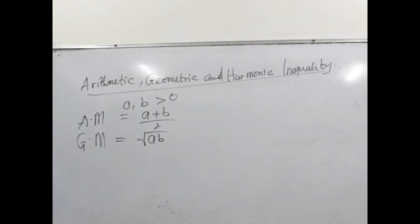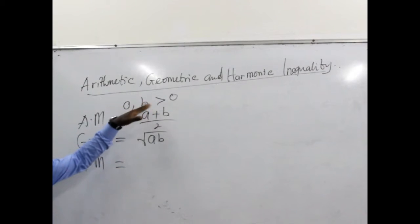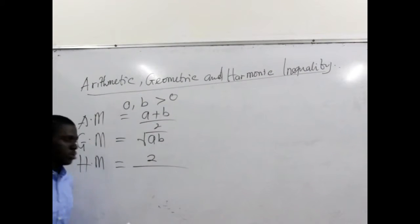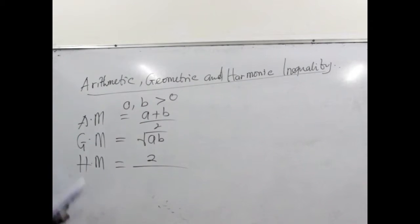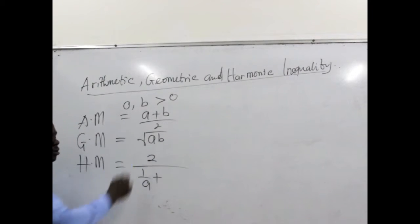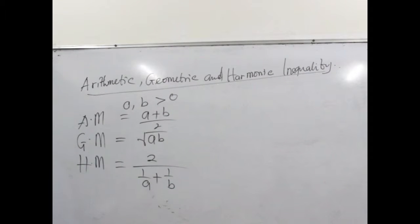We move on and look at the harmonic mean, which we represent as HM. Harmonic mean is quite interesting — the number of values is placed in the numerator, so we have 2 for A and B. Then we divide by the sum of the reciprocals of the numbers: 1 over A plus 1 over B. This basically is the harmonic mean.